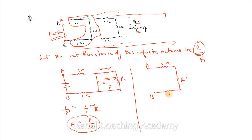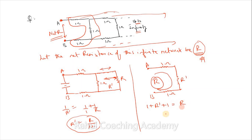We also have another 1 ohm at point B. It's a simple series network. Since solving this entire redrawn network must again give R — because it's still part of the infinite loop — we set up: 1 + R dash + 1 = R, that is 2 + R dash = R. Substituting R dash = R/(R + 1), we get 2 + R/(R+1) = R.